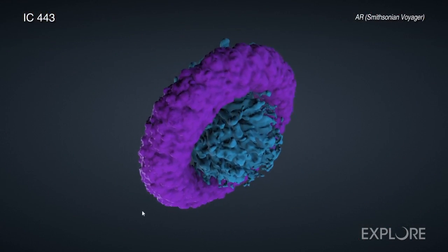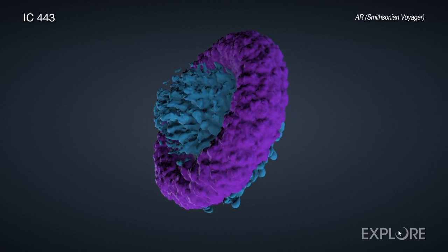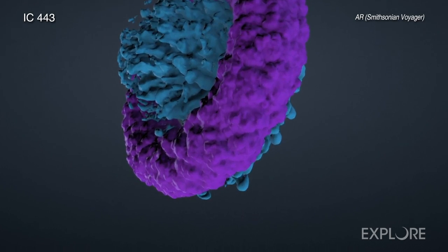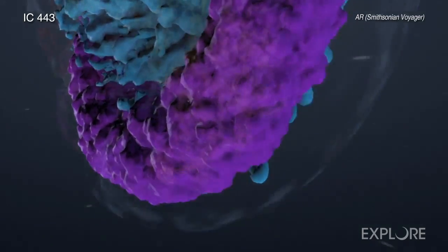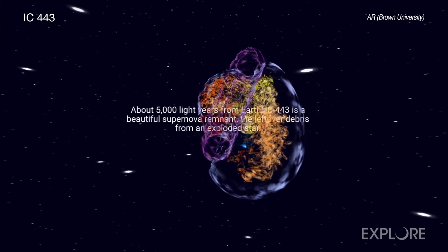The inclusion of the Chandra collection in Voyager coincides with the release of Chandra's latest 3D model, a stunning supernova remnant, the remains of an exploded star called IC443, located about 5,000 light-years from Earth.